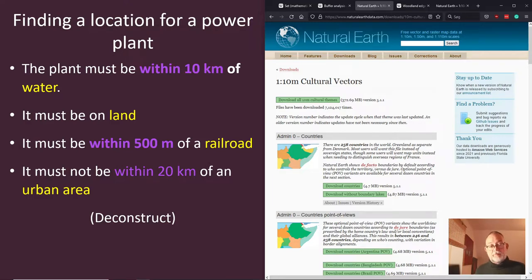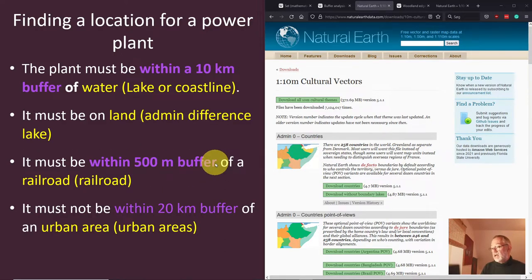So we have now deconstructed some of these elements here. We can start talking about it again as layers and operations. So I guess that we could translate our within distance to a buffer on border, and border could be the admin, sorry, the lake and the coastlines. Our land could be our admin difference our lakes, railroads, and urban areas. So that's basically the first step of my deconstruction.